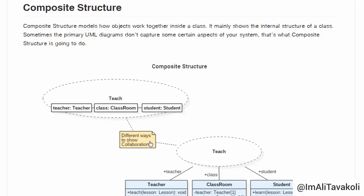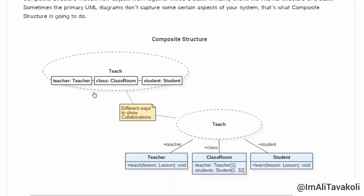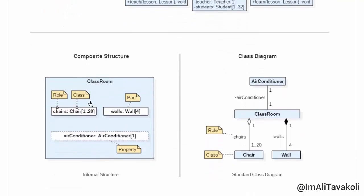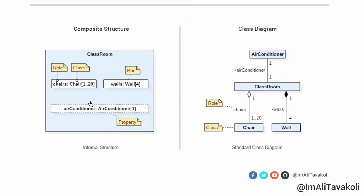Here is an example of a composite structure. In here, we have shown collaborations. The collaboration notation from part 1 is like this. In this example, we have the composite structure of the classroom class. We have shown its parts — these two are parts — and this is the property with a dashed line. And this is the equivalent class diagram version of it.